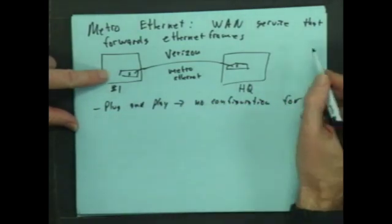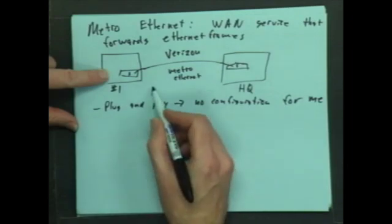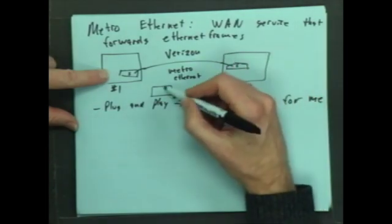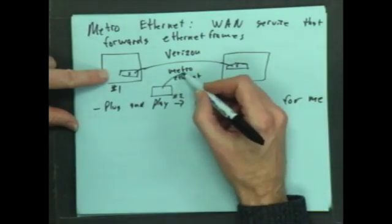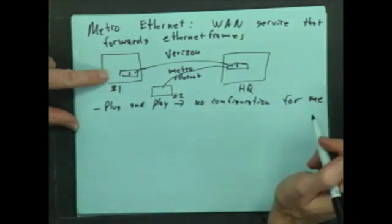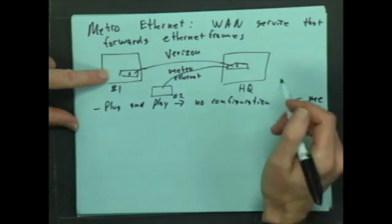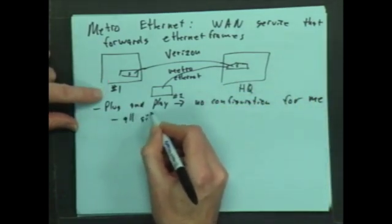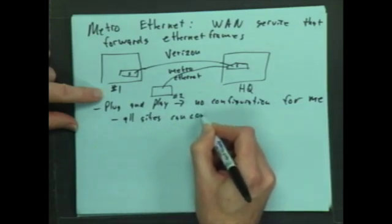Let's say I put in another site. So here's site number two. All I have to do is get another Metro Ethernet connection. And what that means is that all the sites can connect to each other.